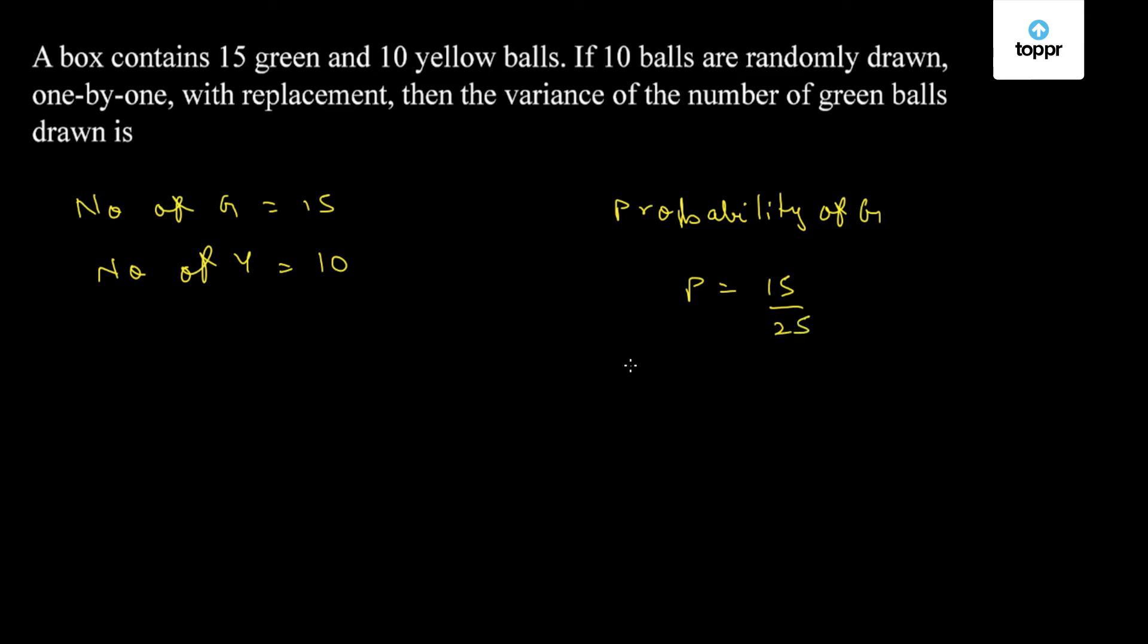As we are replacing each time, the probability of not green, or yellow, let it be represented by Q, that is equal to 10 by 25.